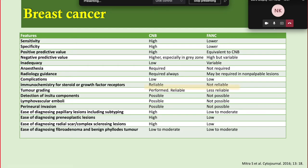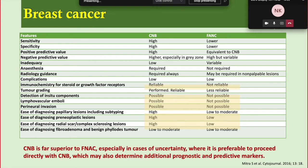For breast cancer, many studies show that core biopsy is more reliable than FNAC for immunohistochemistry markers required by medical and radiation oncologists for chemotherapy planning. ER, PR, and HER2 status cannot be determined with FNAC alone. Core biopsy also enables diagnosis of perineoplastic lesions and radial scar complex sclerosing lesions. Core biopsy is far superior to FNAC, especially in cases of uncertainty, and may also determine additional prognostic and predictive markers like immunohistochemistry.